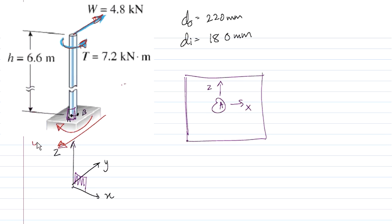So 4.8 kilonewtons and my torque is 7.2 kilonewton-meters. Like we discussed, if I look at the reactive torque, my shear stress direction should be here.